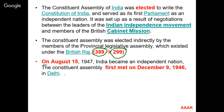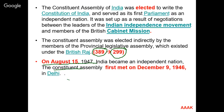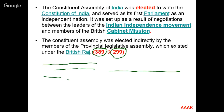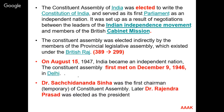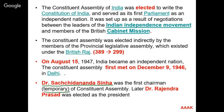India got independence on August 15, 1947, and the constituent assembly met for the first time on December 9, 1946 in Delhi. Dr. Sachidananda Sinha was the temporary first chairman of the constituent assembly. Later, the constituent assembly elected Dr. Rajendra Prasad as the first elected president of the constituent assembly.